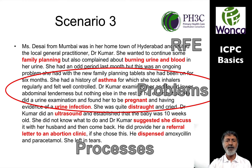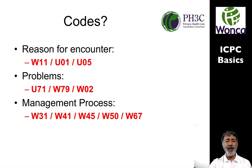In scenario three, Mrs. Desai's reasons for encounter are that she wanted family planning, and she is complaining of burning urine and blood in her urine. The problems picked up are asthma, pregnancy, a urine infection, and she seems quite distraught. Processes undertaken: an ultrasound, suggesting she discuss it with her husband, a referral letter to the clinic, dispensing amoxicillin, and a urine pregnancy test. Reasons for encounter: W11, U01, U05. Problems: U71, W79, W02. Management process: W31, W41, W45, W50, W67.